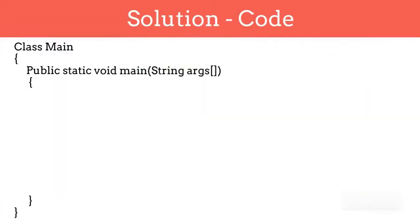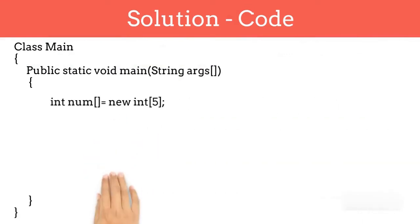Now let's write the class and main function. If you want to understand what 'public static void main' is, you can check out my short video for it. Now let's define the integer array with size 5. We are defining an integer array because we want to store numbers. If we want to save strings, we would define an array of strings.